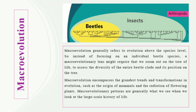So if we are talking about the origin of arthropods, insects, and then beetles, this is basically macroevolution — how these groups of animals evolved. For example, the origin of mammals and the radiation of flowering plants are examples of macroevolution. Macroevolutionary patterns are generally what we see when we look at the large-scale history of life.